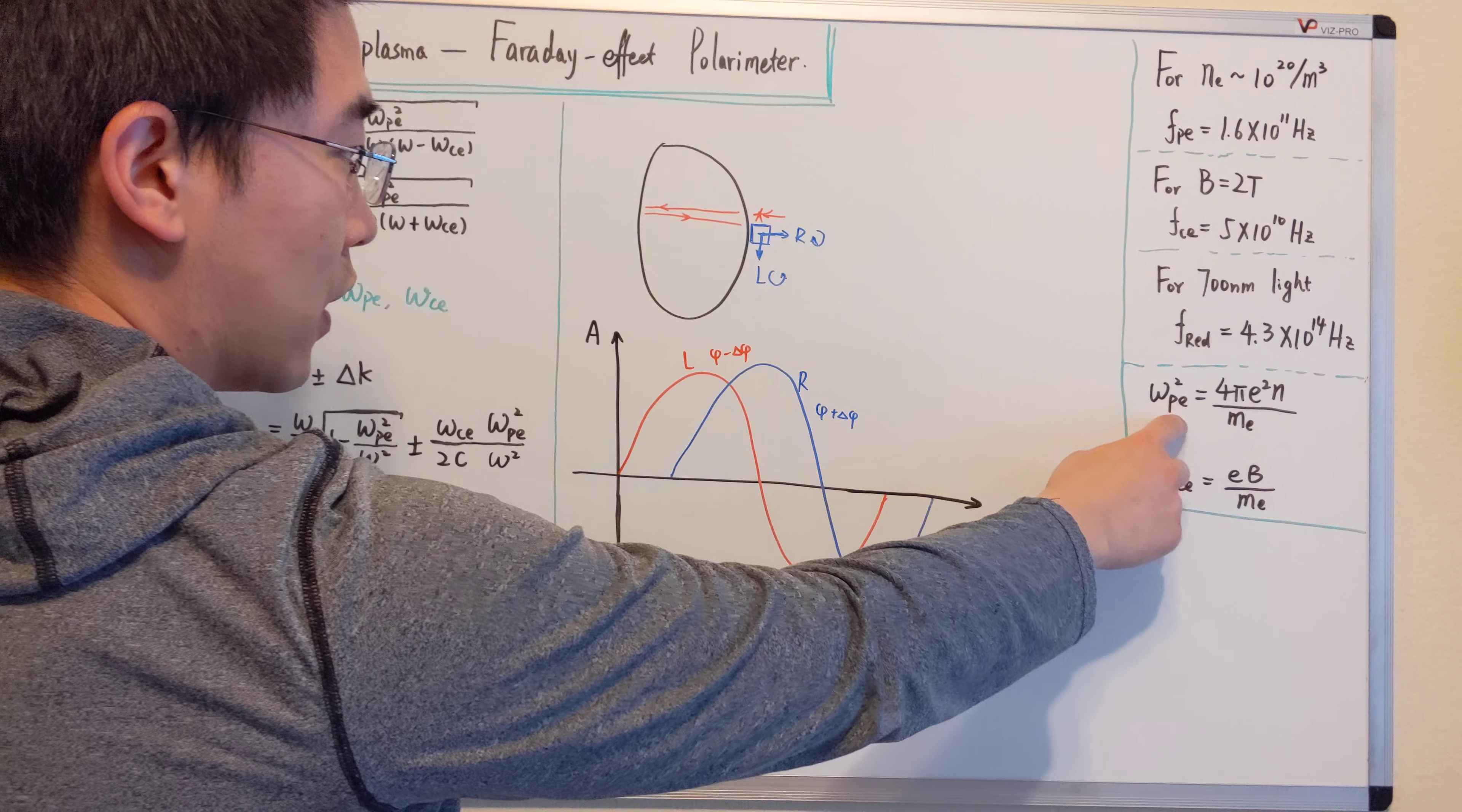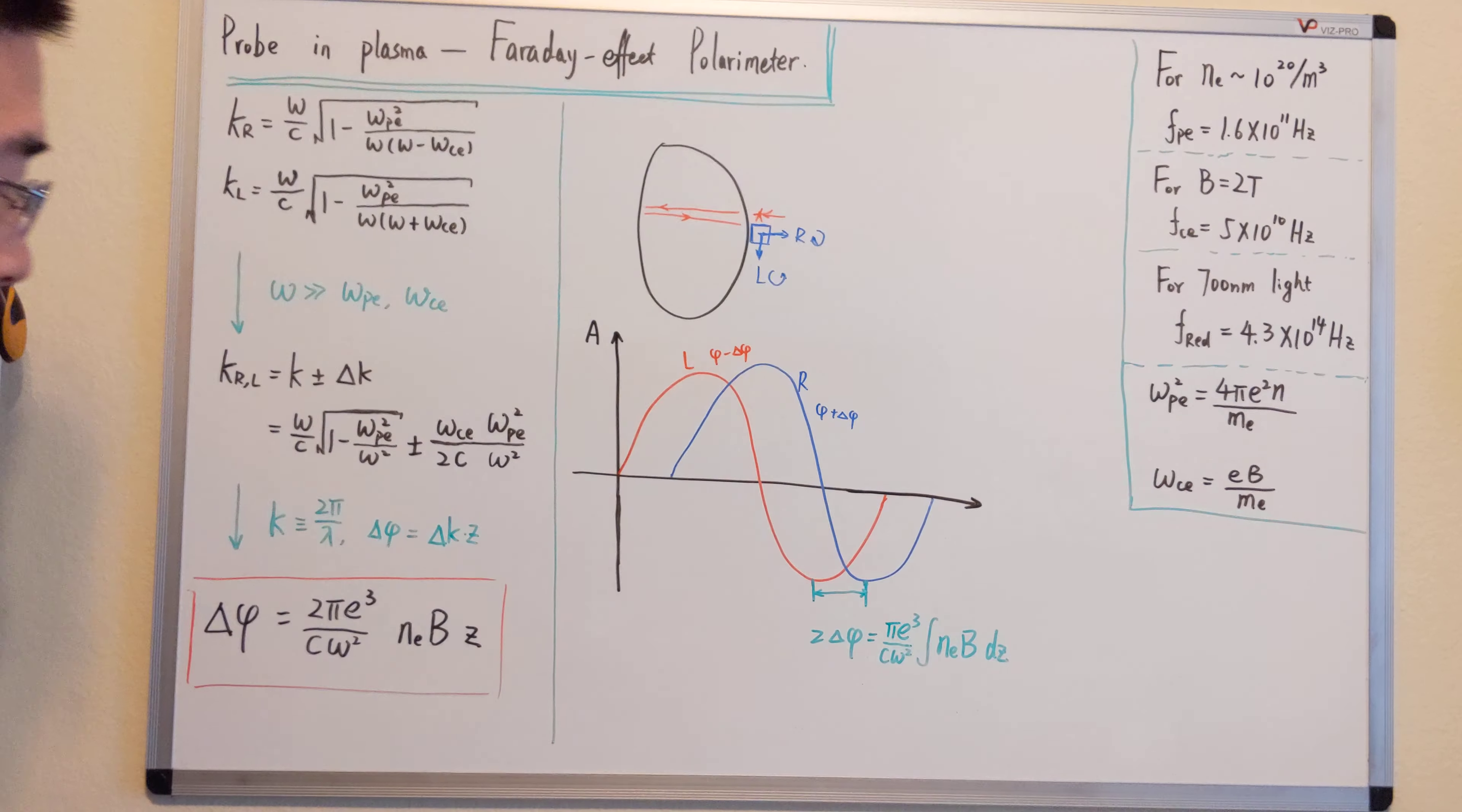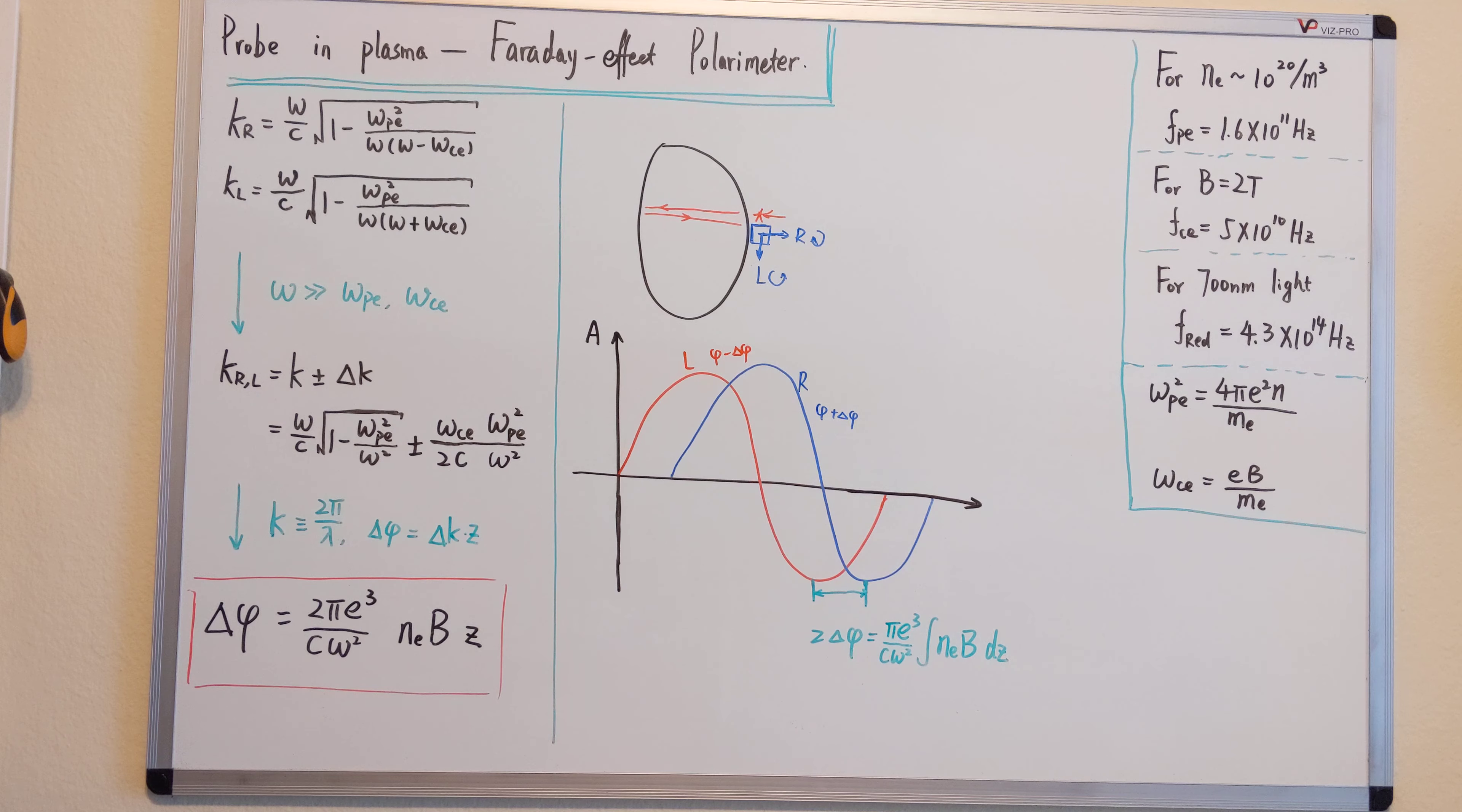Using the definition of omega p and omega c e, plug it in here, we're left with this expression. By the way, this is all in the Gaussian unit. We're left with this. So that's basically the phase difference.